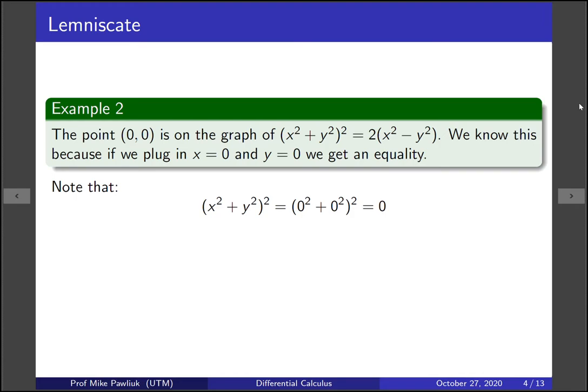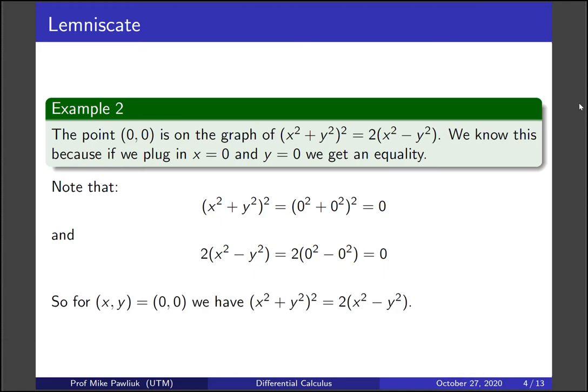The left hand side if you plug in zero outputs zero. The right hand side if you plug in zero also gives you zero. So together we know that for x, y is the point (0,0), we have this equality, therefore (0,0) is on the curve.